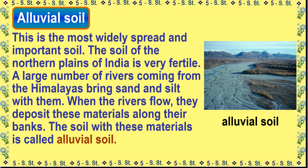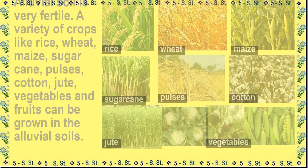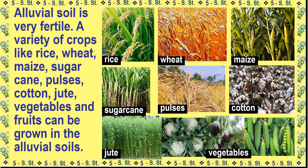Alluvial soil is the most widely spread and important soil. The soil of the northern plains of India is very fertile. A large number of rivers coming from the Himalayas bring sand and silt with them; when the rivers flow, they deposit these materials along their banks, forming alluvial soil. A variety of crops like rice, wheat, maize, sugarcane, pulses, cotton, jute, vegetables, and fruits can be grown in alluvial soil.